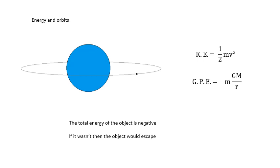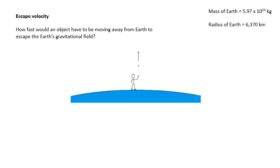Energy and orbits: an object in orbit around a planet has kinetic energy ½mv² and gravitational potential energy mV, where V is the potential at that radius, giving GPE = −mGM/r. The total energy is negative, because if it weren't, the object would have enough kinetic energy to escape the Earth's gravitational field.